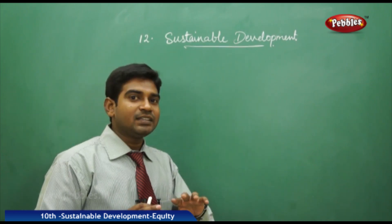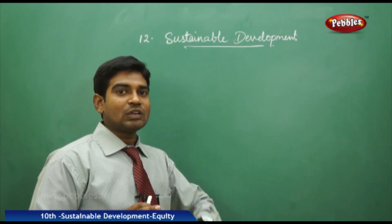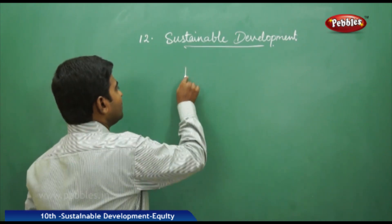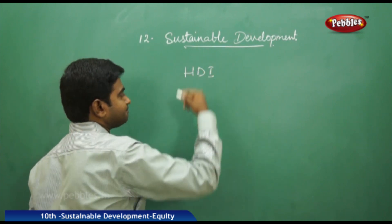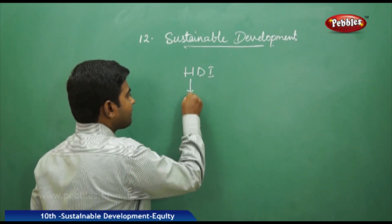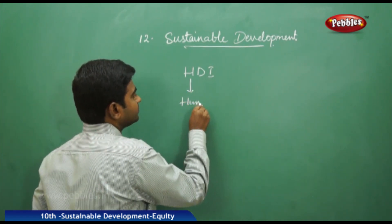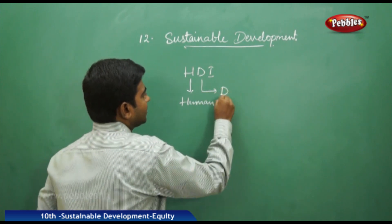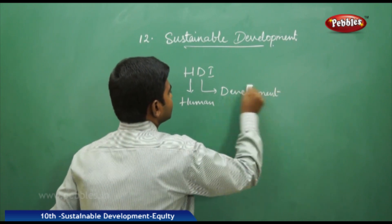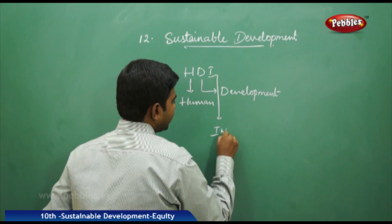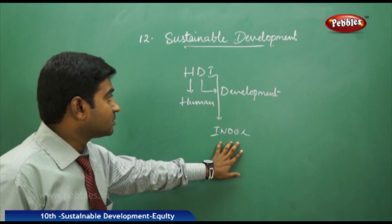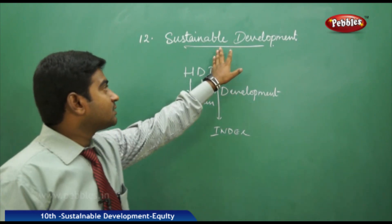Before addressing all these issues, let us see how the basic calculation of sustainable development is done. See here — Human Development Index, represented by HDI. H for Human, D for Development, I for Index. Now, in human development index, we have development and sustainable development.